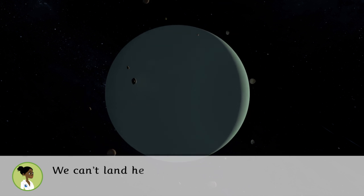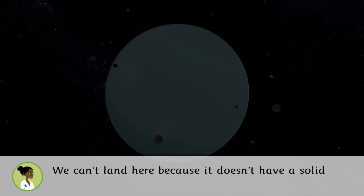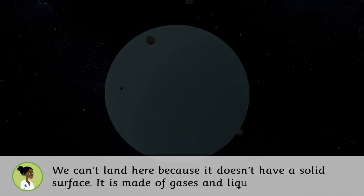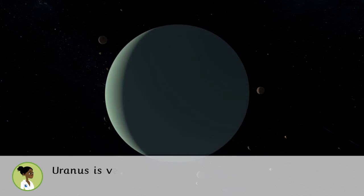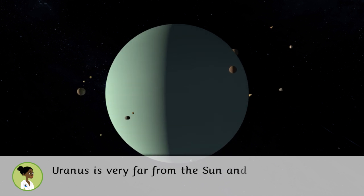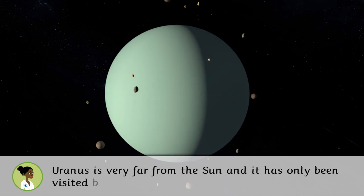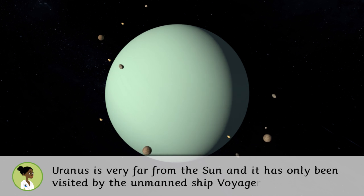We can't land here because it doesn't have a solid surface. It is made of gases and liquids. Uranus is very far from the sun and has only been visited by the unmanned ship Voyager 2.